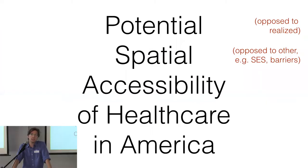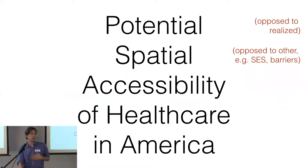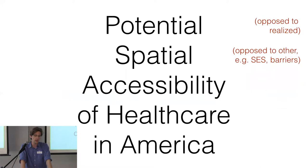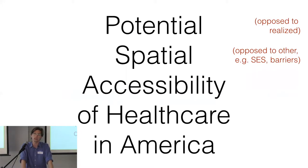We're doing this in the context of potential spatial accessibility of healthcare in the United States — 'potential' meaning the barriers to access that are perceived before people have paid some high cost to get there, spatial accessibility as opposed to other socio-economic barriers. The techniques we're thinking about apply just as well to other saturated public resources.